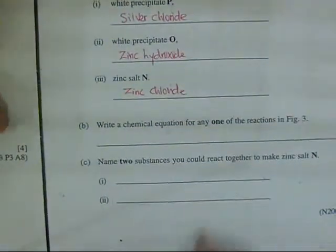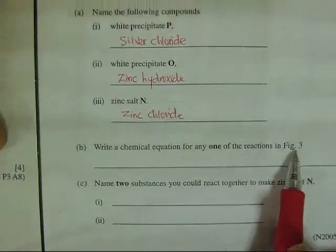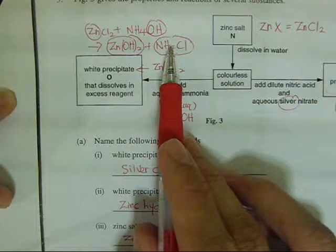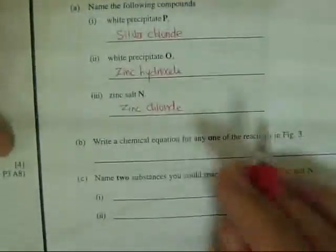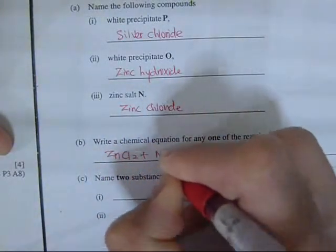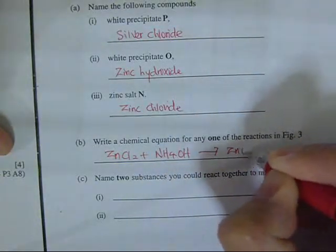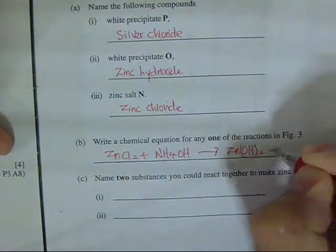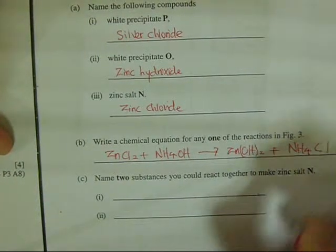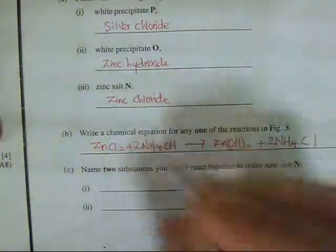Write a chemical equation for any one of the reactions in Figure 3. The equation is: ZnCl₂ + 2NH₄OH → Zn(OH)₂ + 2NH₄Cl. You place a 2 in front of NH₄OH and a 2 in front of NH₄Cl to balance the equation.